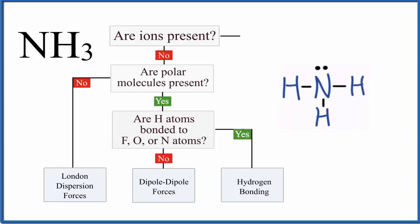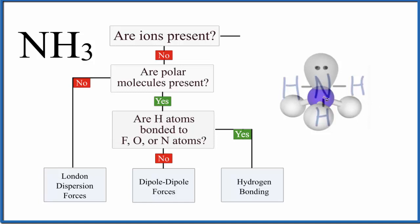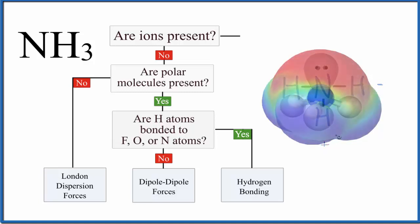That'll look like this. You can see how this lone pair here forces down the hydrogen atoms. And because of that, the nitrogen up here, which is more electronegative than the hydrogens, we end up with a negative charge up here and kind of a positive charge down here. So this is a polar molecule. So are polar molecules present? Yes.